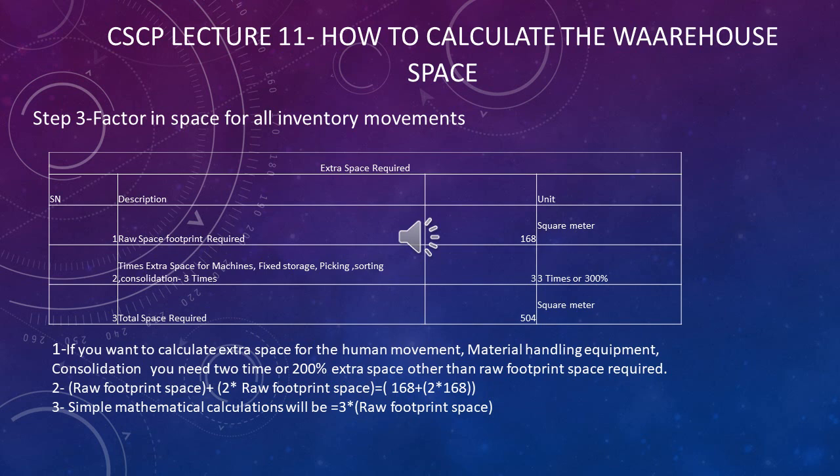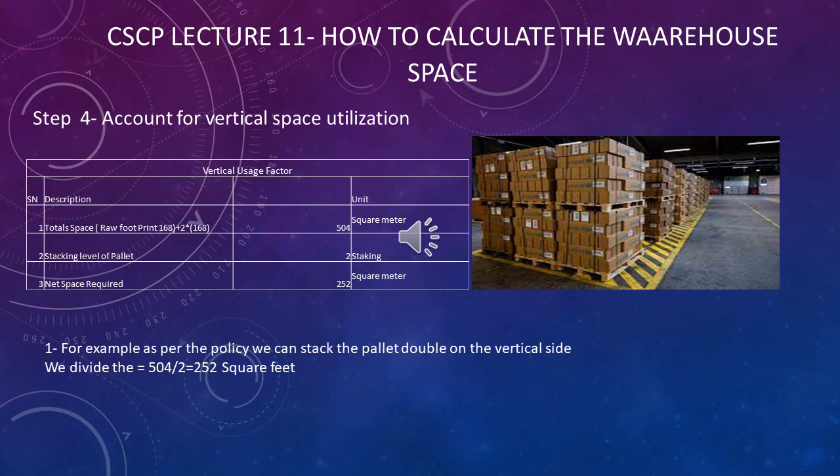Step 4: Account for vertical space utilization. As more vertical space is used, the total floor space required is reduced. For example, if we can stack the microwave oven pallets two high — one pallet placed on top of another — we divide 504 square meters by 2, giving a net space requirement of 252 square meters.